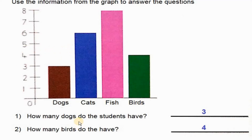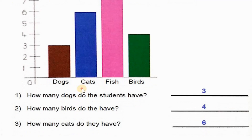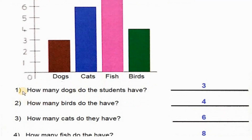Now let's answer the questions. Question number one: How many dogs do the students have? One, two, three. So, three.